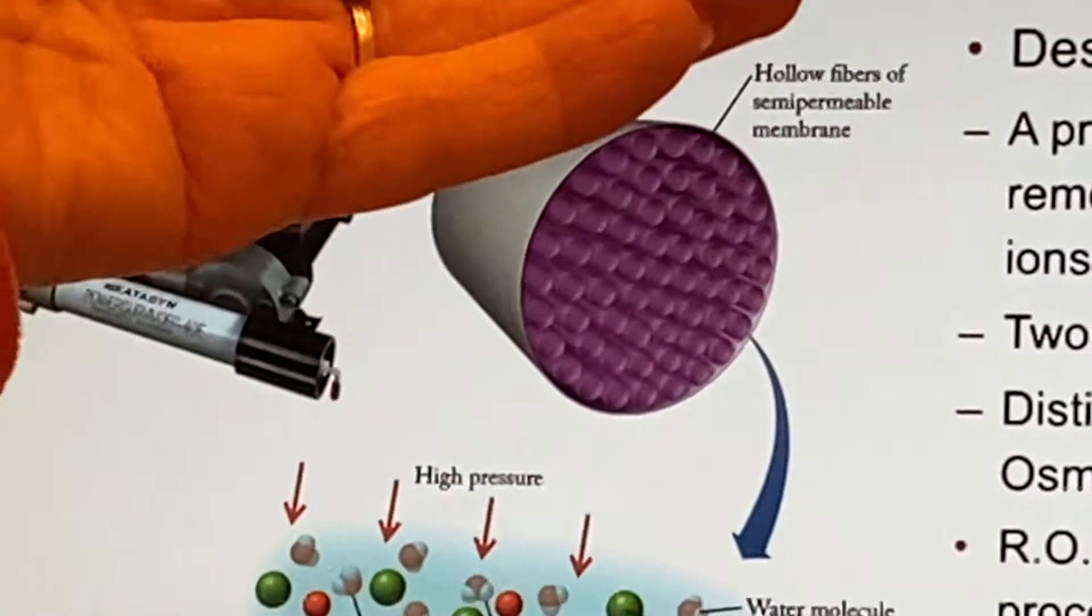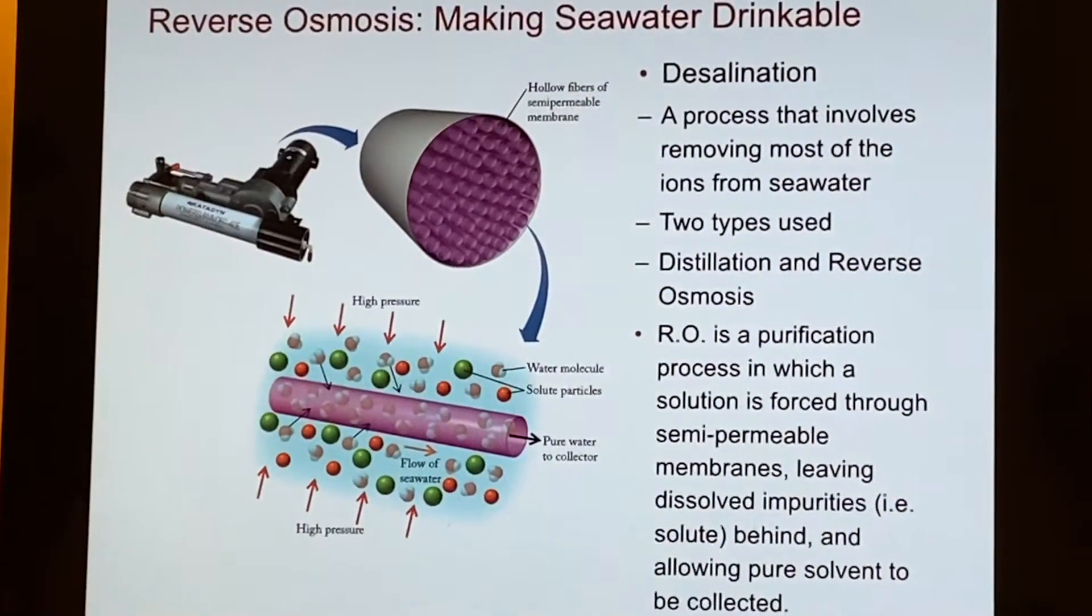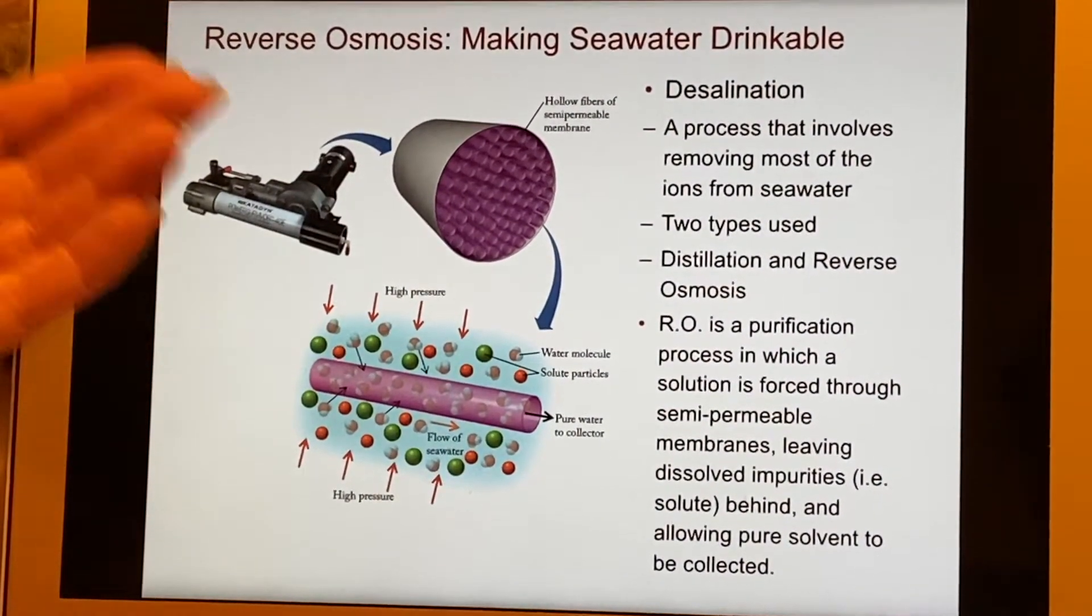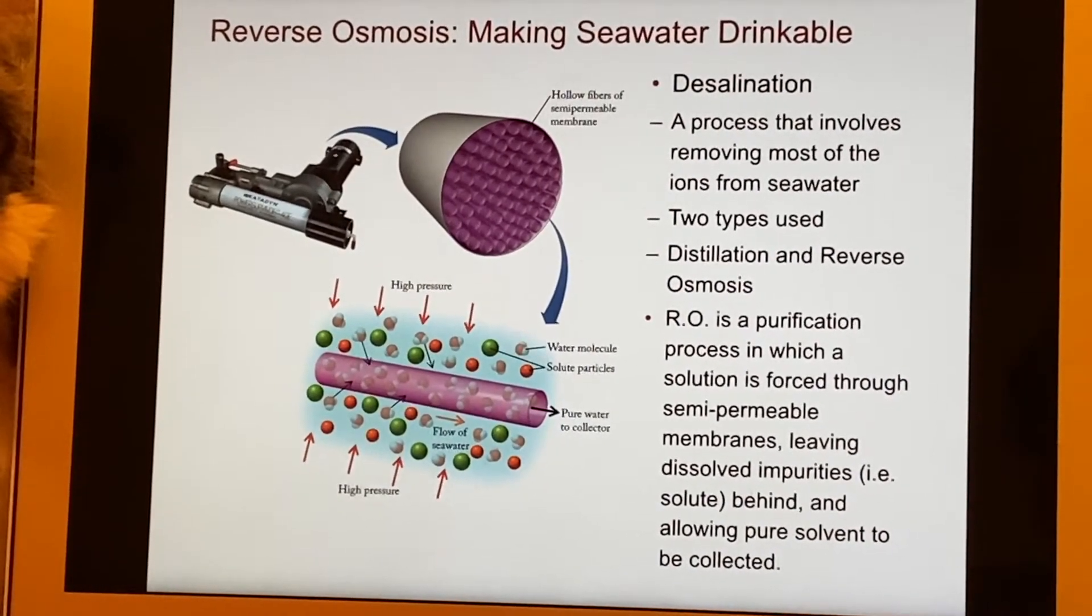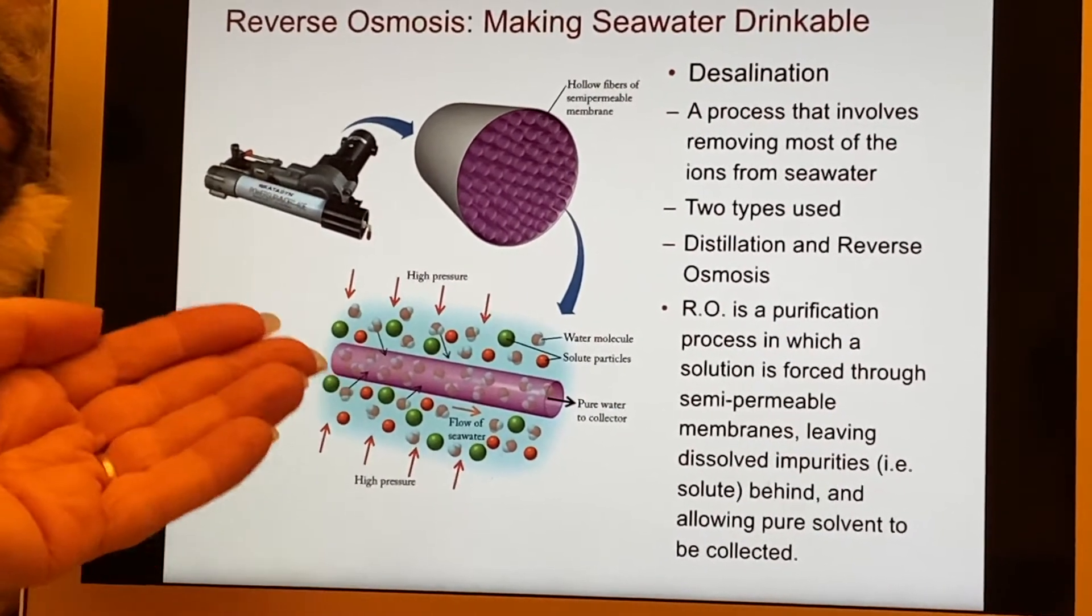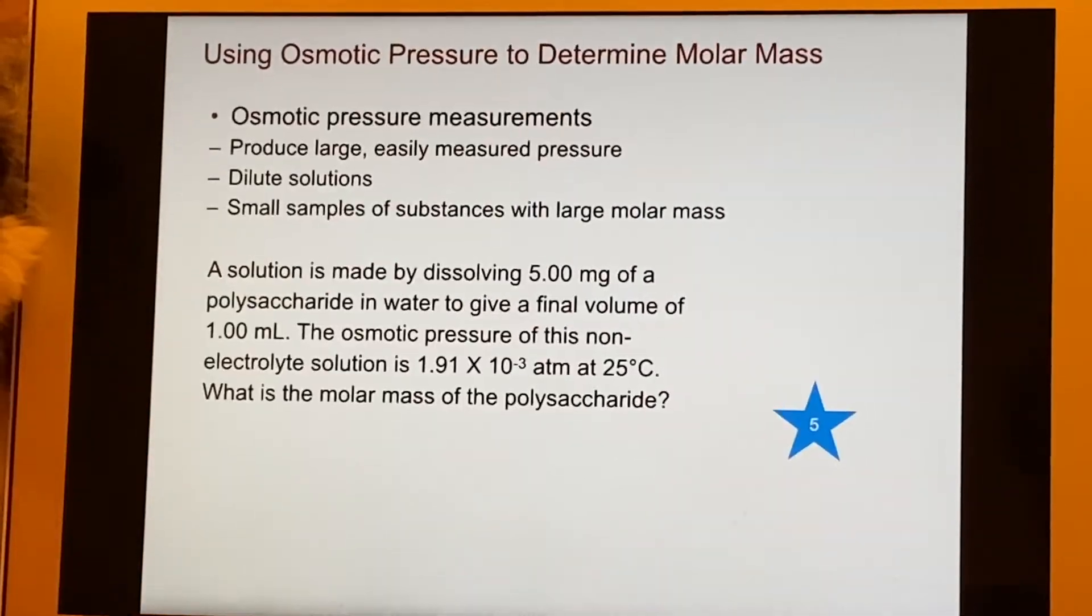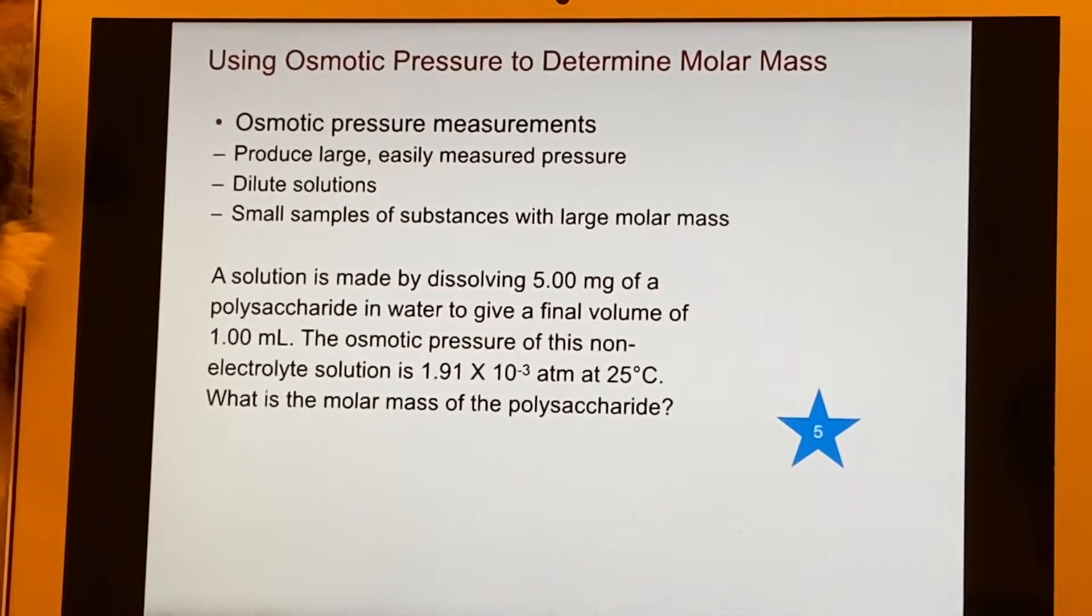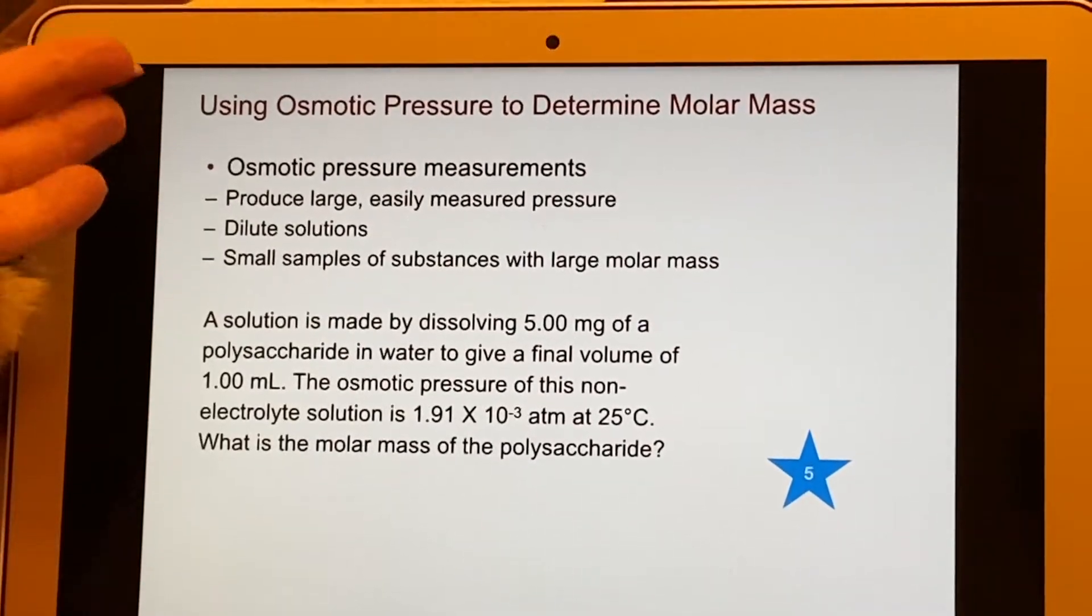So you end up with a desalination plant using reverse osmosis. In fact, that is what we use to make the water you use in the lab - instead of using distillation, we use reverse osmosis to give you pure water to use. So just a purification process allowing you to collect the pure solvent, leaving behind the particles that were dissolved in it - the solute. What we would like to do with it in the lab though is something a little more strange. We can use it to determine molar mass.